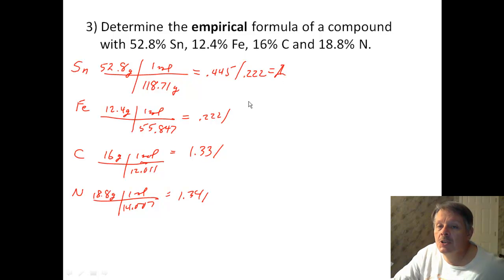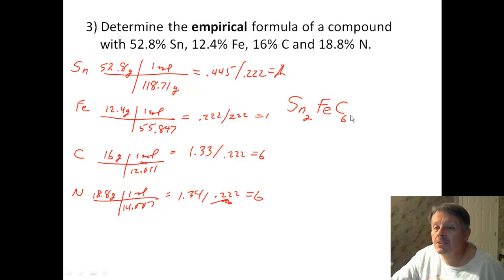First one gives me 2. Iron clearly gives me 1. And this one actually gives me 6. So 0.222 and that one gives me 6. All right, so my ratio is 2 to 1 to 6 to 6. So that's my empirical formula for that compound.